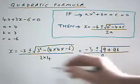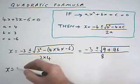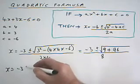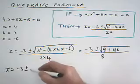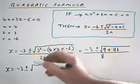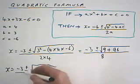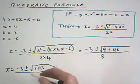Okay. So that simplifies now to x equals minus 3 plus or minus the square root. 96 add 9, that's 105 divided by 8.